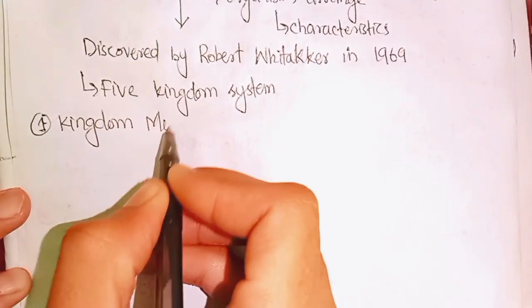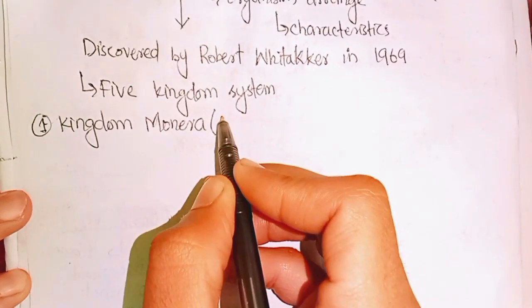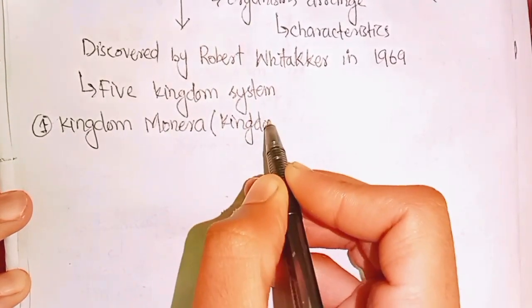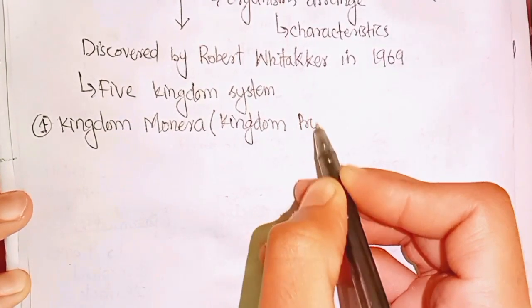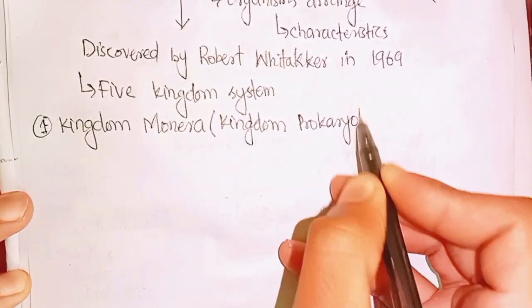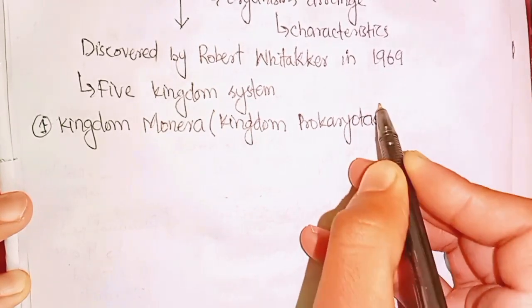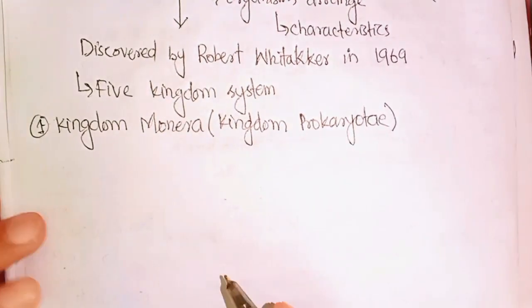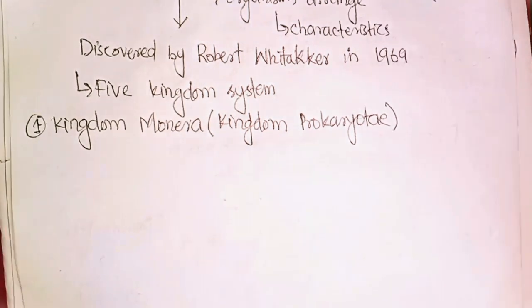The first kingdom is Kingdom Monera. Kingdom Monera consists of prokaryotic organisms. These organisms are the first kingdom.